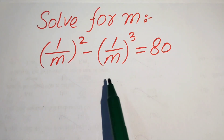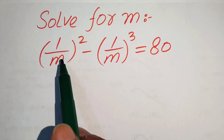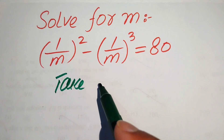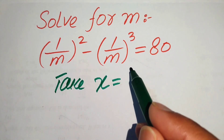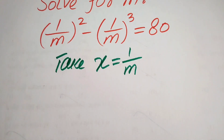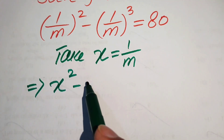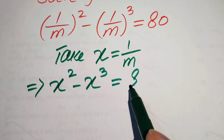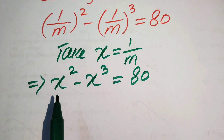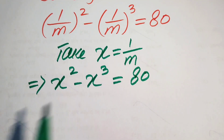The very first step is to convert this equation into simplified form. We take 1/m equals to x. So we replace 1/m with x, and our equation is written as x squared minus x cubed equals 80. First we find the value of x, and after that we back substitute x equals 1/m to get the value of m.